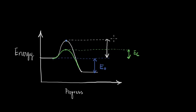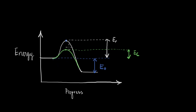Before using the catalyst, the activation energy for the forward reaction was ER, represented by this distance. On using the catalyst, the activation energy has now reduced to EC. An important point to note here is that the catalyst is not lowering the activation energy of the original reaction — that is still ER. What the catalyst is doing is providing an alternative path whose energy barrier is lower. So the catalyst is not changing the original activation energy, and that is an important distinction. You can also see here how the catalyst speeds up not just the forward reaction but also the reverse reaction.